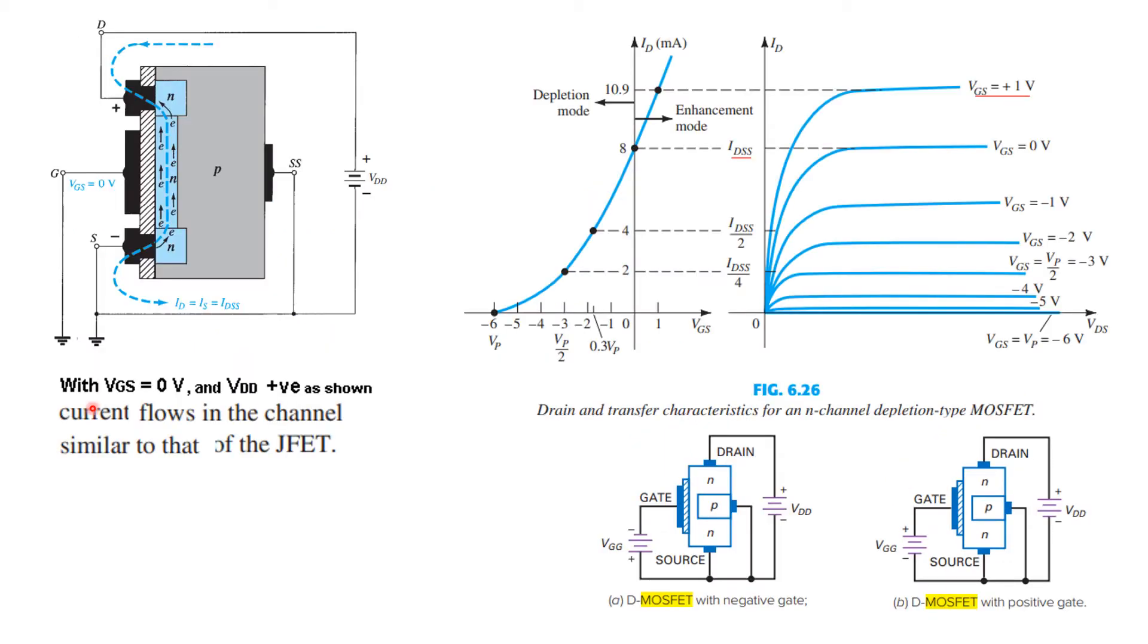Now when VGS, that means the gate voltage, is grounded and VDD is positive, current flows in the channel as you can see from here the electrons flowing through the channel only this part, similar to that of the JFET.